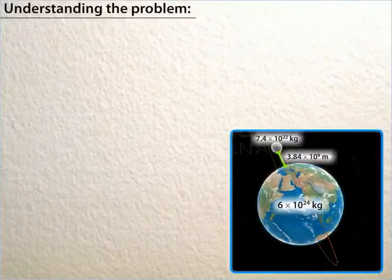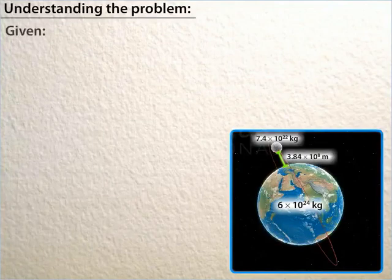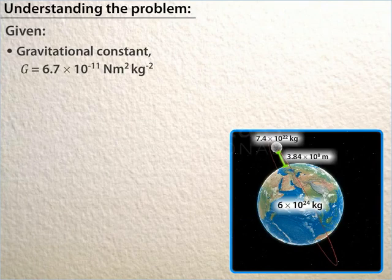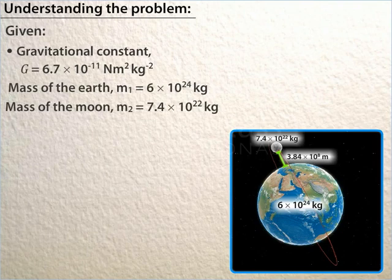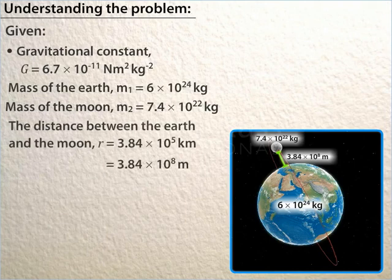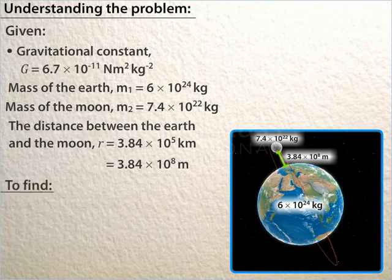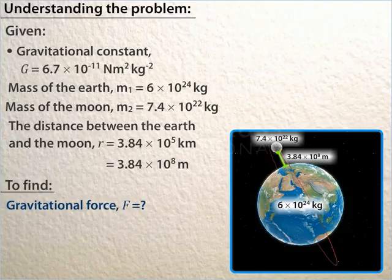Let us begin with understanding the problem. The given information is: gravitational constant G = 6.7 × 10⁻¹¹ Newton meter square per kilogram square; the mass of the Earth M1 = 6 × 10²⁴ kilograms; the mass of the Moon M2 = 7.4 × 10²² kilograms; and the distance between the Earth and the Moon R = 3.84 × 10⁸ meters. We have to find the gravitational force exerted by the Earth on the Moon.